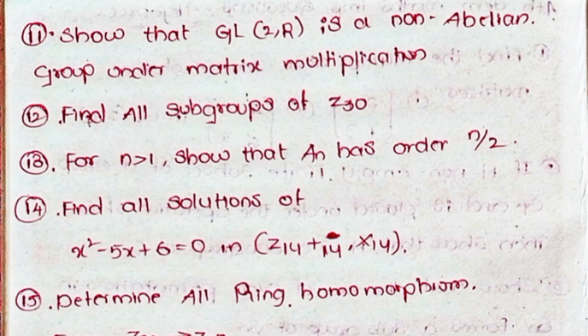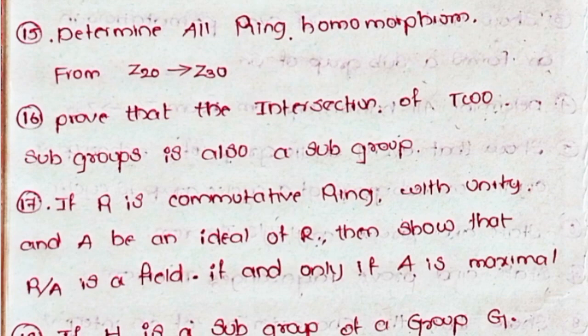Fourteenth, find all solutions of x² - 5x + 6 = 0 in Z14. Fifteenth, determine all ring homomorphisms from Z20 to Z30. Sixteenth, prove that the intersection of two subgroups is also a subgroup. Seventeenth, if R is a commutative ring with unity and A is an ideal of R, then show that R/A is a field if and only if A is maximal.